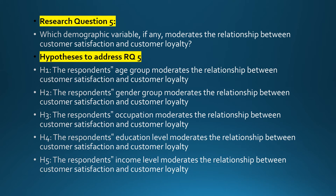H2: The respondent's gender group moderates the relationship between customer satisfaction and customer loyalty. H3: The respondent's occupation moderates the relationship between customer satisfaction and customer loyalty. H4: The respondent's education level moderates the relationship between customer satisfaction and customer loyalty. H5: The respondent's income level moderates the relationship between customer satisfaction and customer loyalty.